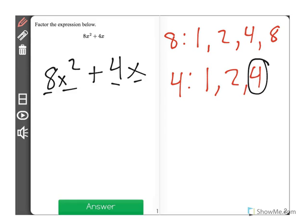Now the greatest factor I see here is 4, so 4 will be on the outside of our factoring equation.